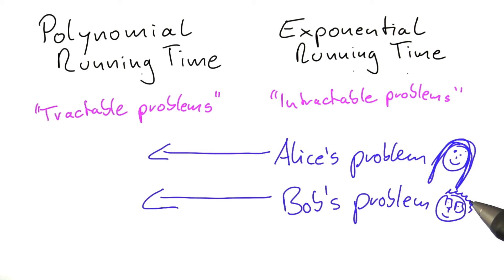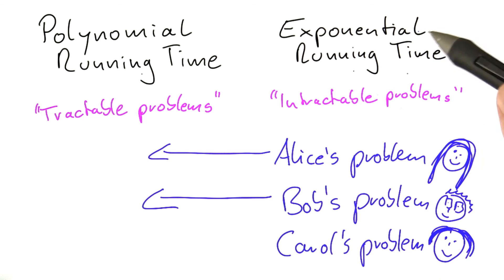To that meeting they also invite a friend of theirs, Carol. As they have learned, Carol is also working on a problem for which she has only found an exponential time algorithm so far.